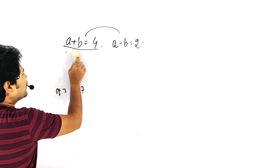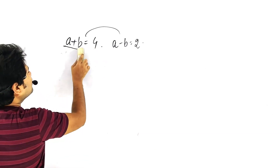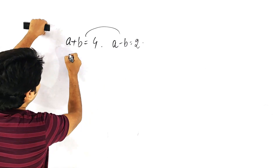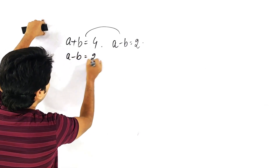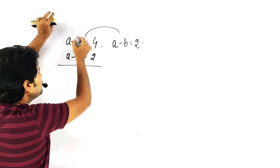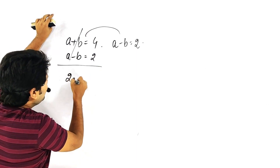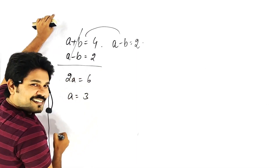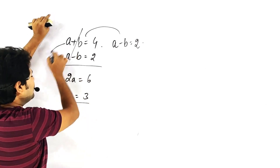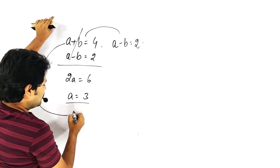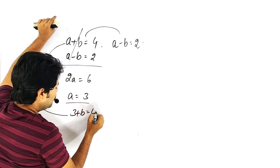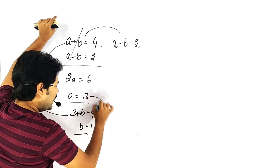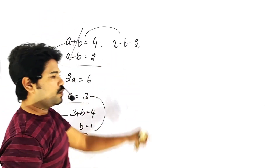Let me do this quickly. Adding the two equations: a minus b equals 2 and a plus b equals 4. Adding them, the b terms cancel, giving 2a equals 6, so a equals 3. Substituting: 3 plus b equals 4, so b equals 1. Therefore a equals 3 and b equals 1.